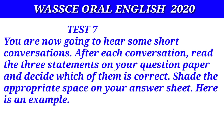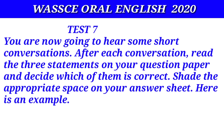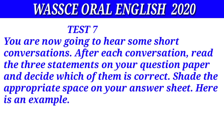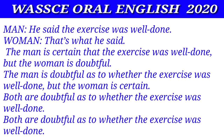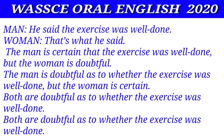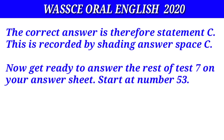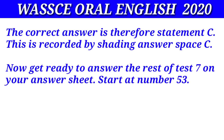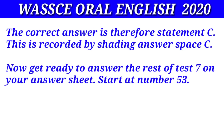Test seven. You are now going to hear some short conversations. After each conversation, read the three statements on your question paper and decide which of them is correct. Shade the appropriate space on your answer sheet. Here is an example: he said the exercise was well done — that's what he said — both are doubtful as to whether the exercise was well done. The correct answer is therefore statement C. This is recorded by shading answer space C. Now get ready to answer the rest of test seven on your answer sheet. Start at number fifty-three.